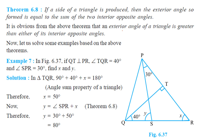If a side of a triangle is produced, then the exterior angle so formed is equal to the sum of the two interior opposite angles. Also, the exterior angle of a triangle is greater than either of the interior opposite angles.